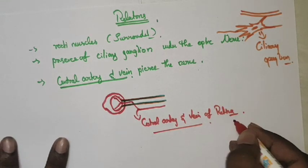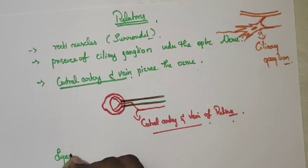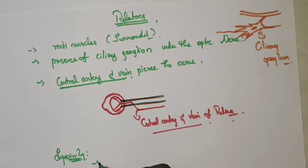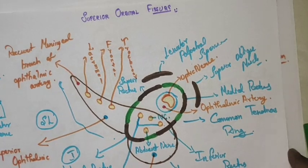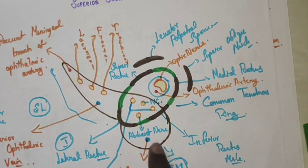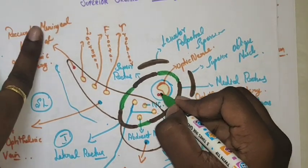The central vessels of the retina form the third relation of the optic nerve. Now for the superior and inferior relations: superiorly the optic nerve is crossed by the ophthalmic artery, the nasociliary nerve, and the superior ophthalmic vein.